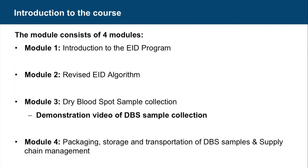The second module will take you through the revised EID algorithm in detail and help you understand the operating procedures for laboratory technicians in all possible scenarios. Please ensure you clearly understand all aspects and scenarios in the algorithm before moving to the third module. The third module takes you through dry blood spot sample collection process and pre-collection requirements, with an additional demonstration video. The last module deals with the current procedures of packaging, storing, and transportation of the DBS samples, and gives a brief summary of the supply chain aspects of the EID program.